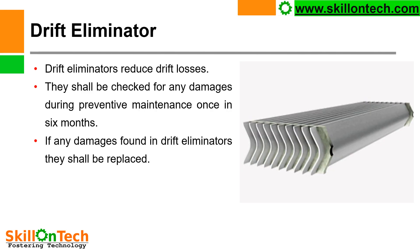Drift eliminators — here you can see these are the drift eliminators. They reduce drift losses by preventing water vapors from being carried out by the air when the induced draft fan is sucking air. They are provided on top of the PVC fills, above the distribution headers. They shall be checked for any damages during preventive maintenance once every 6 months. If any damage is found in drift eliminators, they shall be replaced.